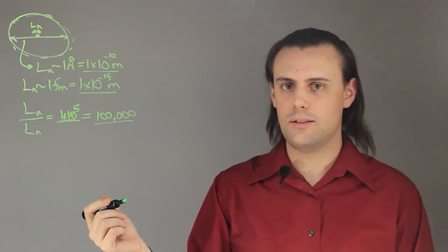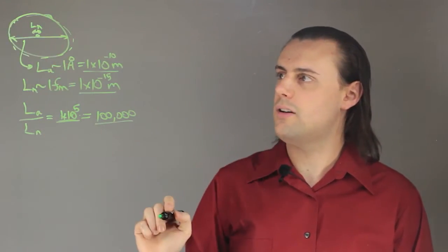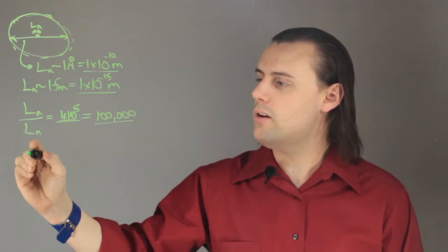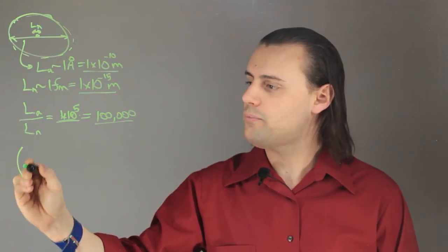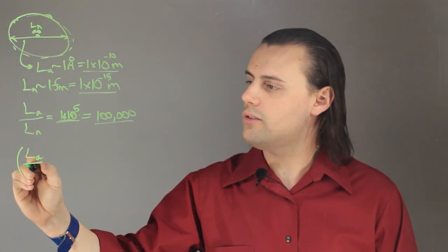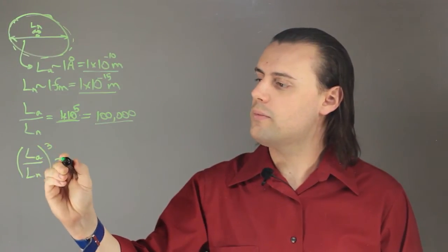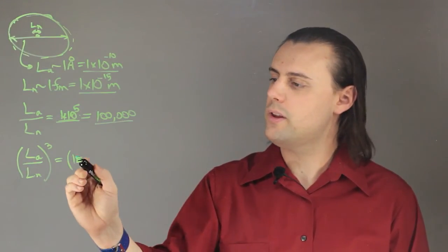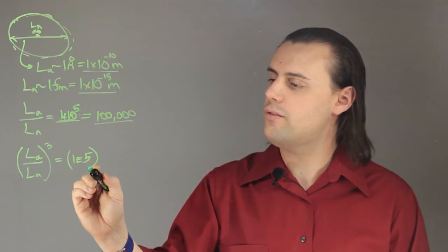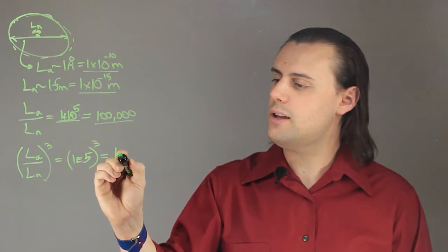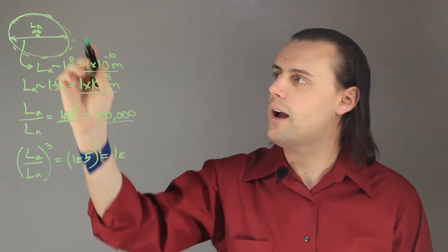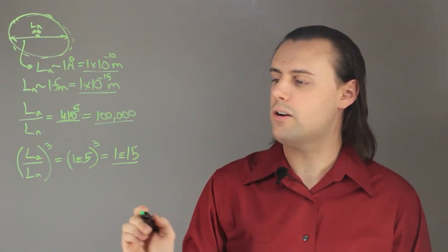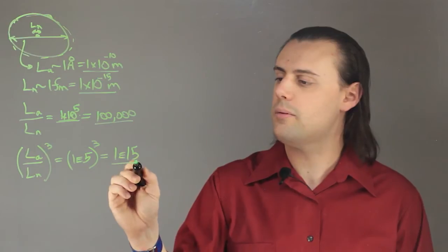If we were interested in seeing how the amount of space occupied by the nucleus versus the entire atom compares, then we know that in three dimensions we can just take the length scales and cube them. So we would end up with 1 times 10 to the 5, cubed, and we would see that the amount of space that the entire atom takes up is 1 times 10 to the 15 times greater than the amount of space that the nucleus takes up.